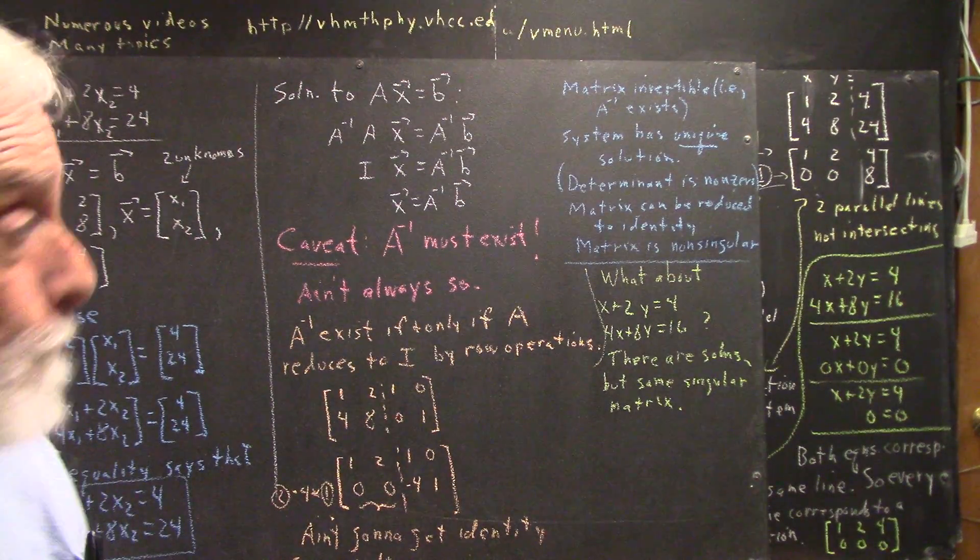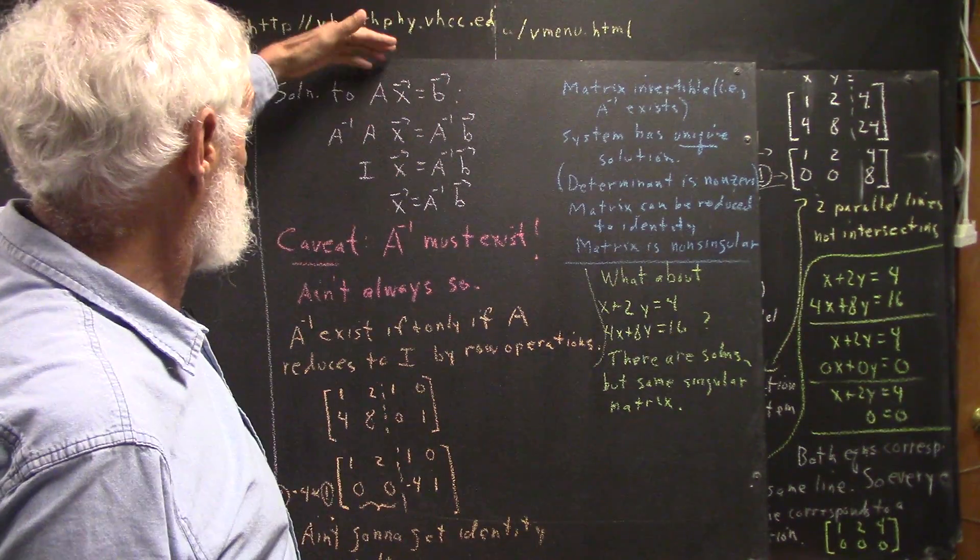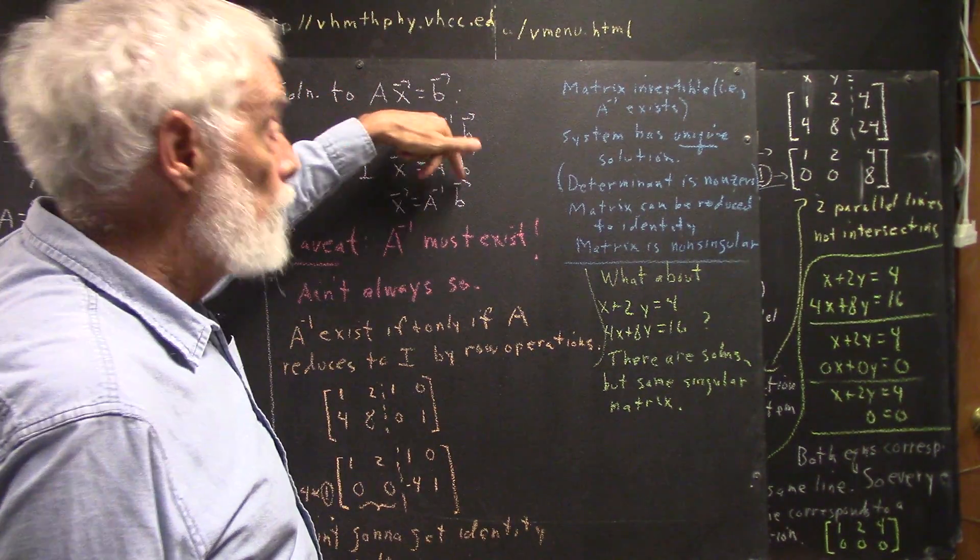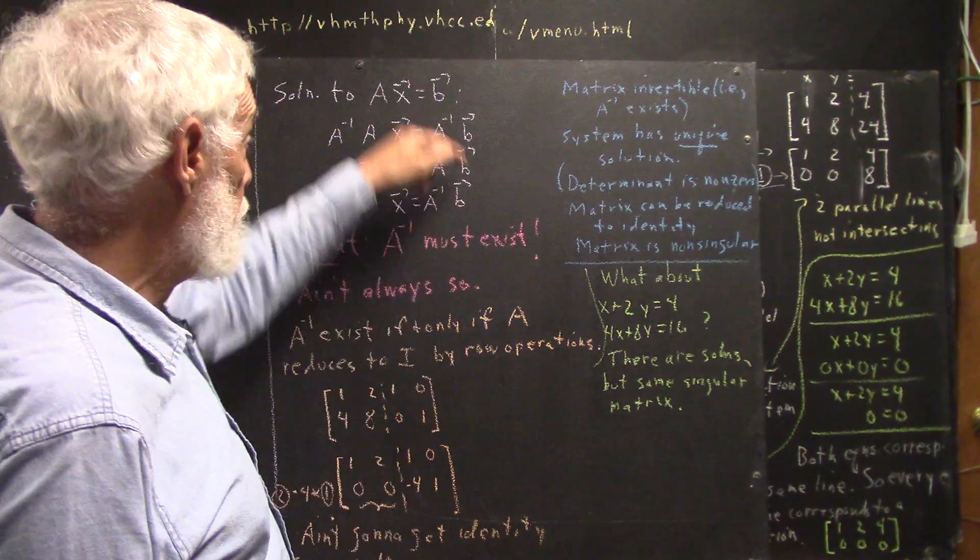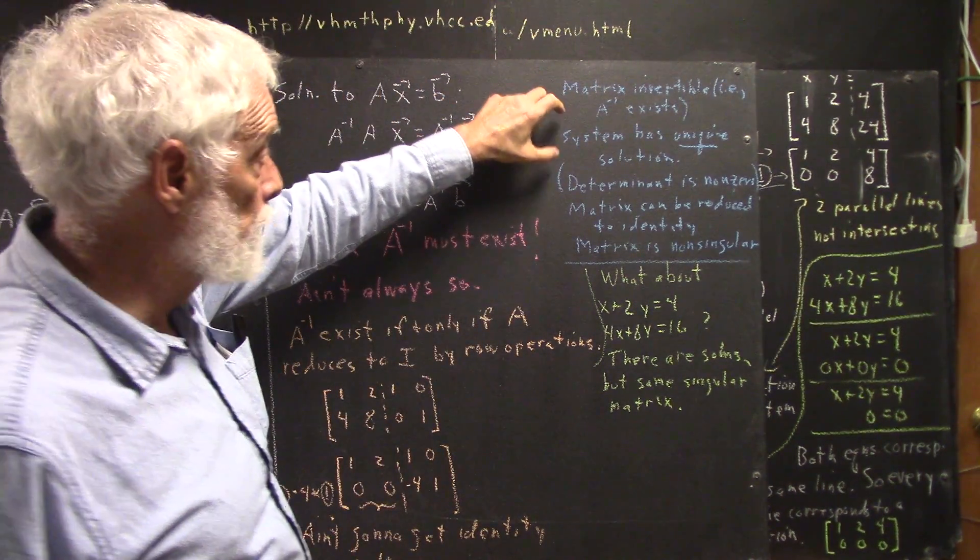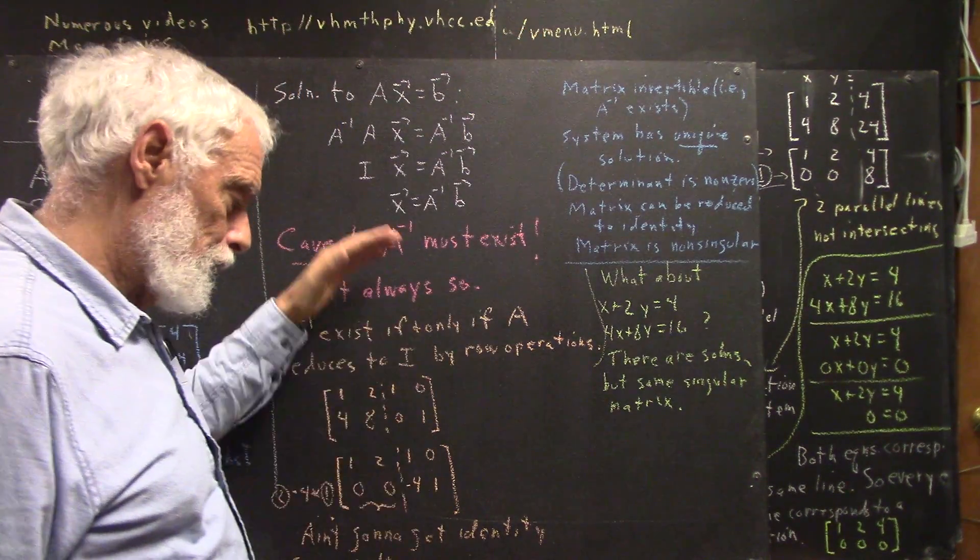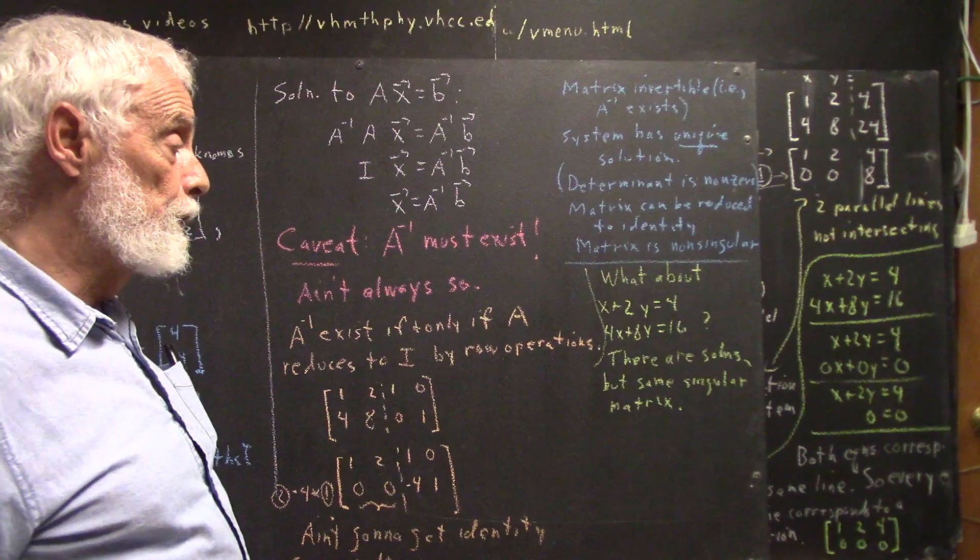I've got that. So, as you see, if the inverse exists, you have a solution to the system for any b. The second is the system has a unique solution, which is what I just said. This and this are equivalent, and you should understand that fairly well by this point.